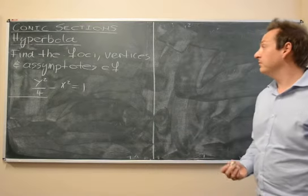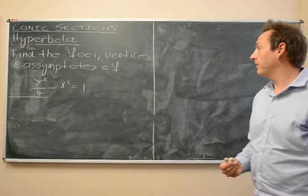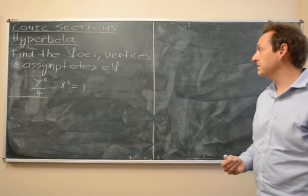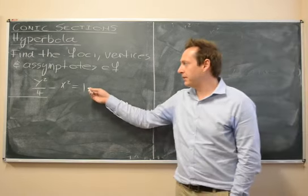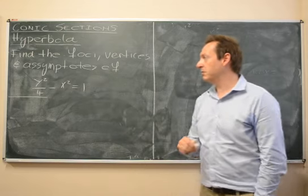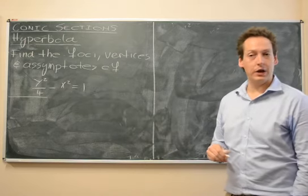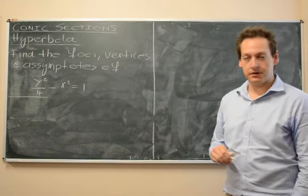So let's now look at an example of a hyperbola. In this example, we want to find the foci, vertices and asymptotes of this hyperbola, y squared over 4 minus x squared is 1. We're also going to sketch the curve.